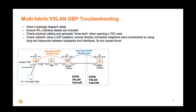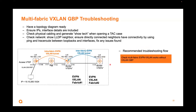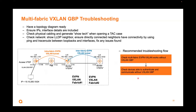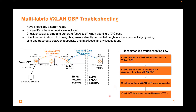For troubleshooting, have a detailed diagram with all ports and loopback address IPs — that's important for troubleshooting VXLAN. The recommended flow is: first, make sure multi-fabric EVPN VXLAN works even without GBP, and that connectivity works between the fabrics. Make sure devices can communicate without GBP to confirm it's not a GBP-related issue. Also verify that single-fabric VXLAN GBP works as expected to isolate whether it's a multi-fabric or single-fabric problem. Finally, check that GBP tags are exchanged between VTAPs — if tags are not exchanged, the policy will not work.